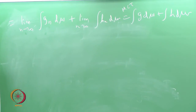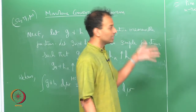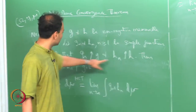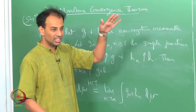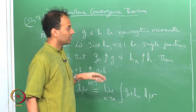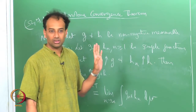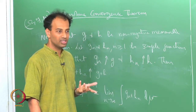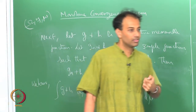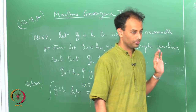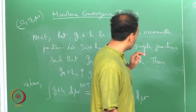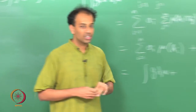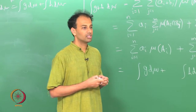So is that proof clear? After the monotone convergence theorem, proving linearity of the integral is a very simple matter — except you have to accept that for any non-negative function g, you can always find a sequence of simple functions which increases to g. It is possible to do this in many ways.